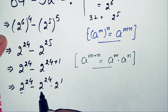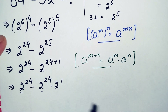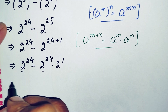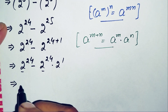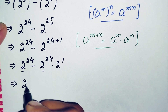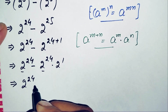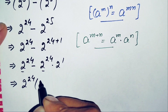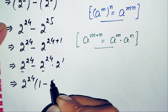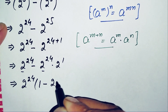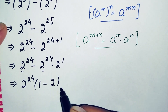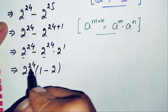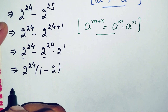Now 2 raised to power 24 is common in both terms. We take it out as a common factor. This gives 2 raised to power 24 times (1 minus 2 raised to power 1). Since 2 raised to power 1 is simply 2, the bracket becomes (1 minus 2). Next, we can rewrite 2 raised to power 24.